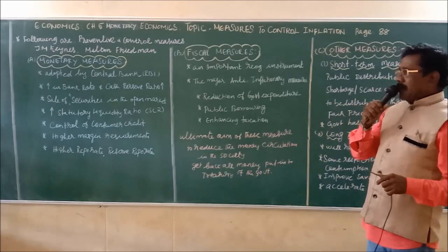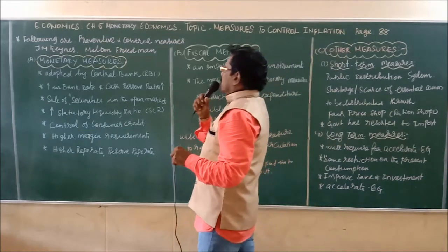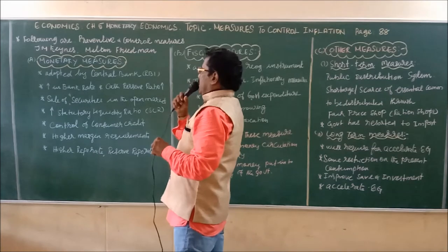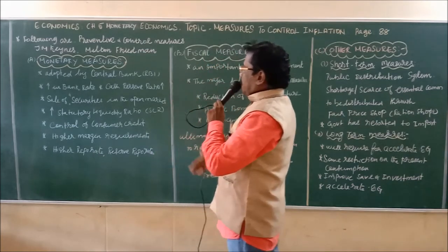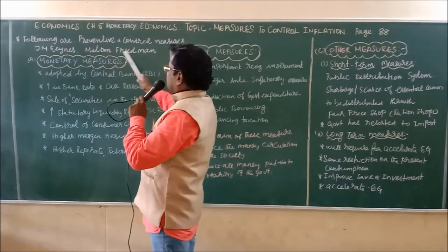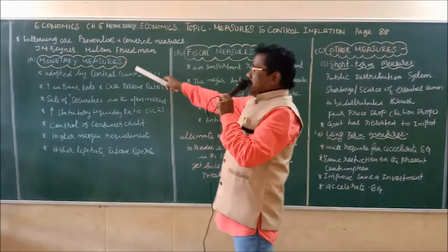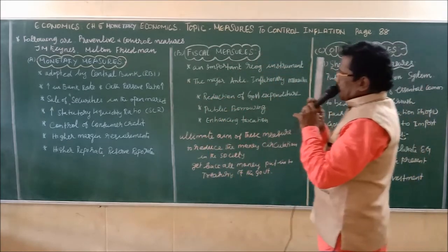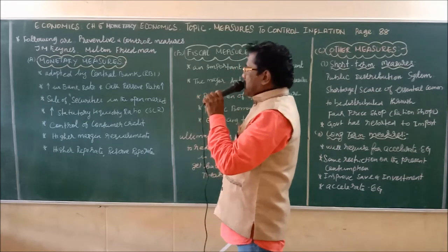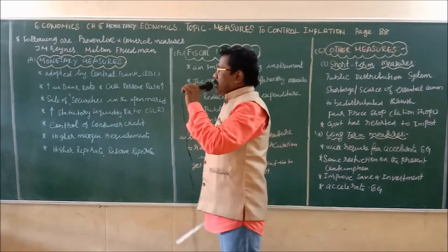Inflation must be controlled by each and every nation or economy. The following are the preventive and control measures of inflation, suggested by J.M. Keynes and Milton Friedman. The measures are classified into three categories: namely monetary measures, fiscal measures, and other measures. First of all we will see about monetary measures.